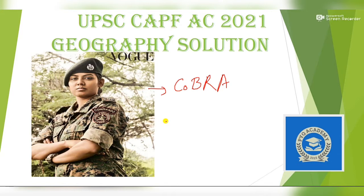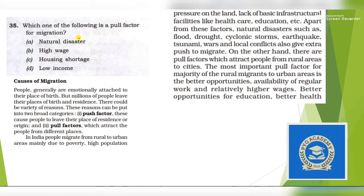So let's start our today's question: which of the following is a pull factor for migration? Let's take an example of two places - Delhi and Bihar. What can be the pull factor of Delhi which can pull migrants from Bihar? Natural disaster - if there is natural disaster in Delhi, why would people come? That's wrong. High wages - yes, if there are high wages, migrants can come and this is a pull factor, so this is correct. Housing shortage and low income would not attract people, so the answer is option B.